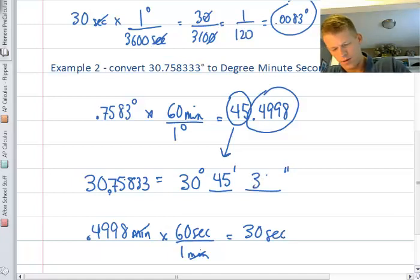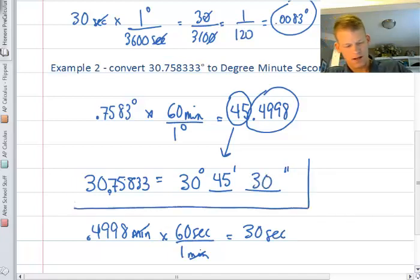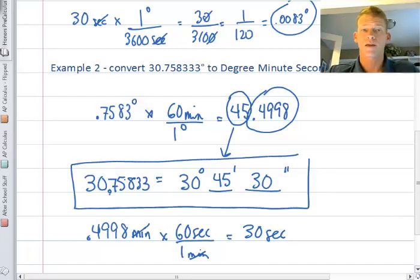I'll just put 30 here. Now I've converted it. Hopefully you see that this is basically what we started with in the original problem when we were converting from degree minute seconds to decimal degrees. We just started with the decimal portion and worked our way back to show we get the same thing.